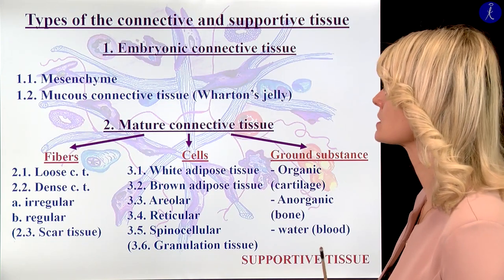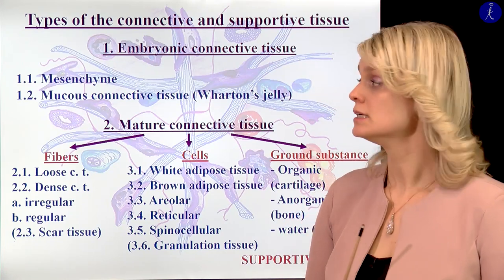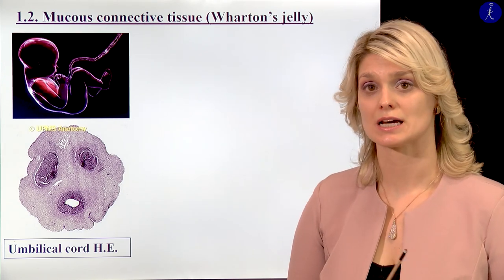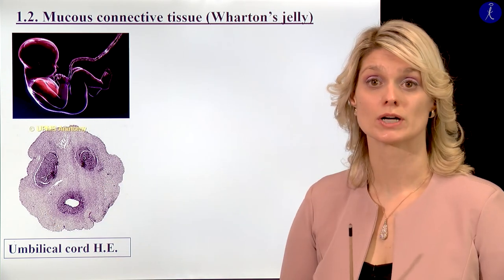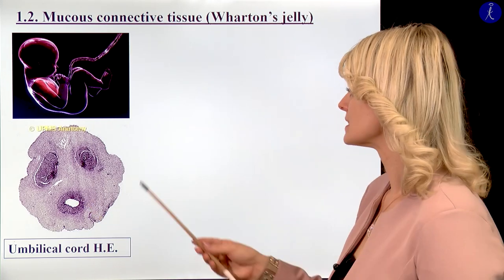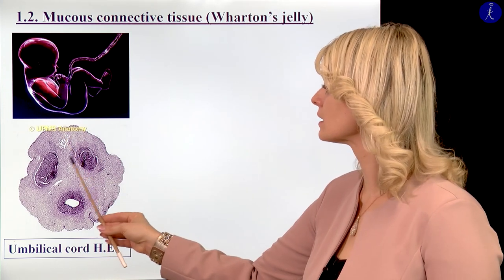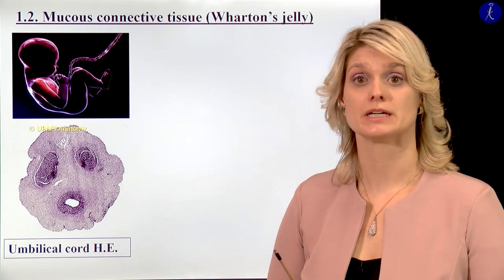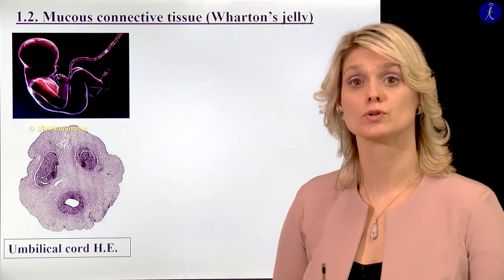The next group within the embryonic connective tissue is Wharton's jelly. I think the students like this slide very much — it is the cross-section of the umbilical cord, and they say it looks like a smiley face. Here you can see three cross-sections of different structures: two umbilical arteries and one umbilical vein. These structures are surrounded by this very special connective tissue called Wharton's jelly.